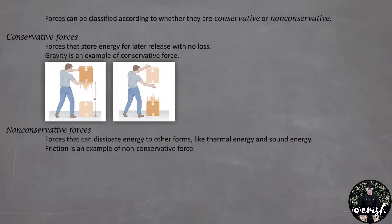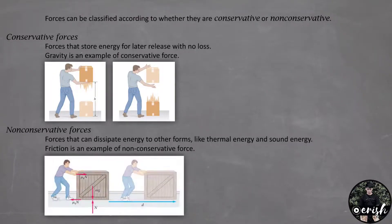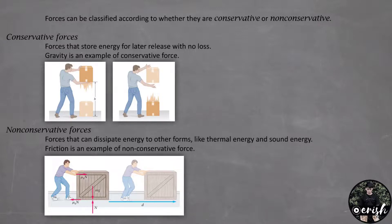One main example of non-conservative forces is friction. In this figure, to push a box of mass M across the floor with constant speed, we need to exert a force equal in magnitude to the frictional force — because the floor provides a frictional force that resists the motion. After moving the box a distance D, the work done is equal to the frictional force times the distance. When we release the box, it simply stays put. Friction provides no work on it after we let go. The work done by a non-conservative force cannot be recovered later as kinetic energy.